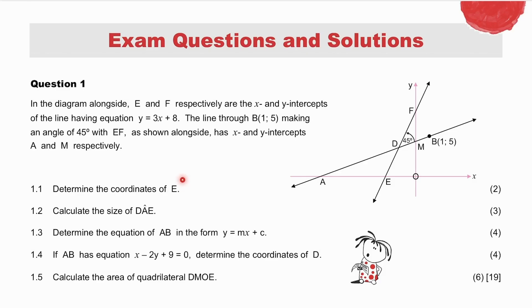The coordinates of E. E is an x-intercept and it is a point on the line. Think about that. Angle DAE is an angle of inclination. The equation of AB. We have point B. Can we find the gradient? We have the angle of inclination. And AB also has the general form equation x minus 2y plus 9 equals 0. The coordinates of D. Its significance is that it is the point of intersection of our two graphs. The area of quadrilateral DMOE. No particular quadrilateral, therefore no particular formula. Check your answers in the following slides where memos are provided.